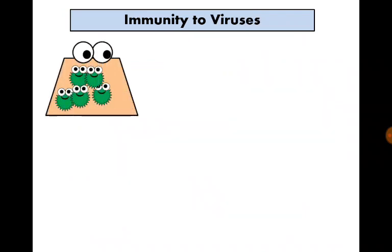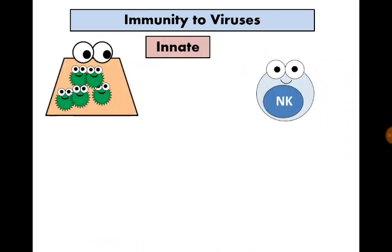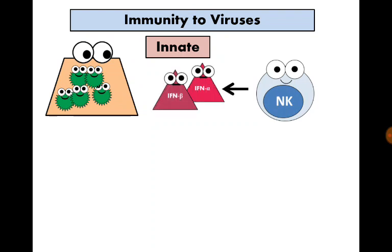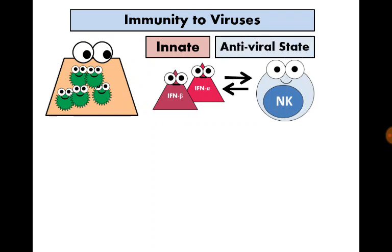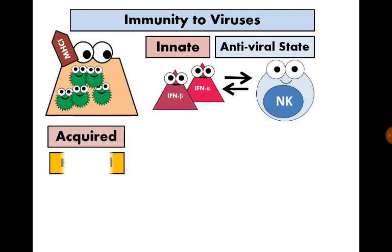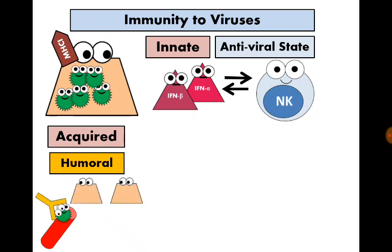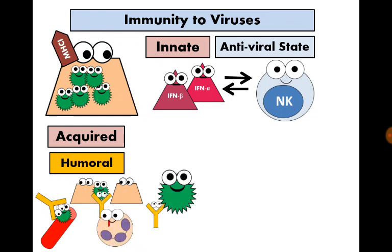Lastly, immunity to viruses. The first line of defense is natural killer cells that secrete interferon-alpha and interferon-beta, which activate natural killer cells to kill virally infected cells, make neighboring cells enter into an antiviral state, and increase MHC class 1 molecule expression on cells. At the acquired immunity level, antibodies attack viruses while passing from one cell to another — they bind to viruses causing neutralization, opsonization, and complement activation.